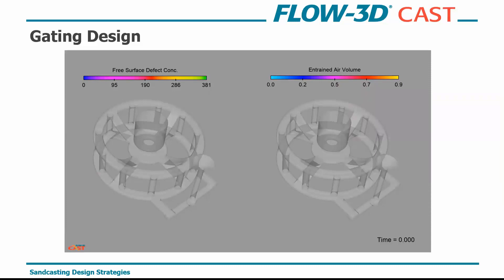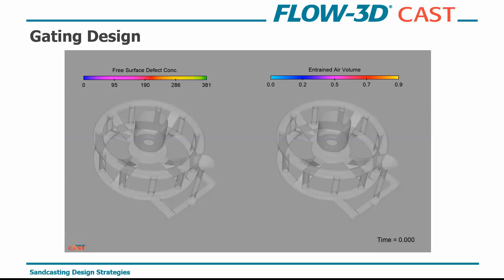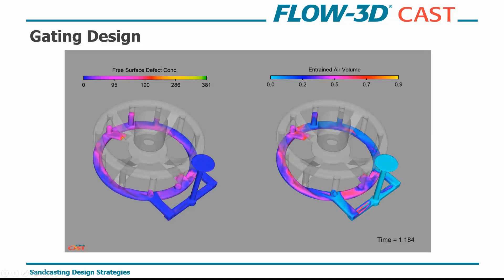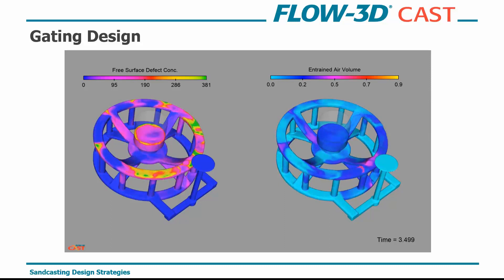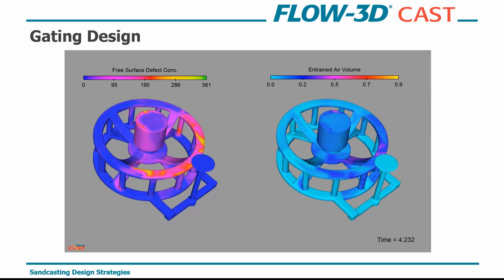With gates added, after being happy with riser placement and solidification, we start filling the part. Two powerful things to look at are free surface defect concentration — the marker for oxide formation in the metal front — and the overall entrained air volume, showing how much turbulence you have during filling. This is the same simulation with two different visual outputs. We get a good fill from the bottom, though it looks turbulent — quite a bit of splashing and sloshing, suggesting our fill rate may be a little too high.